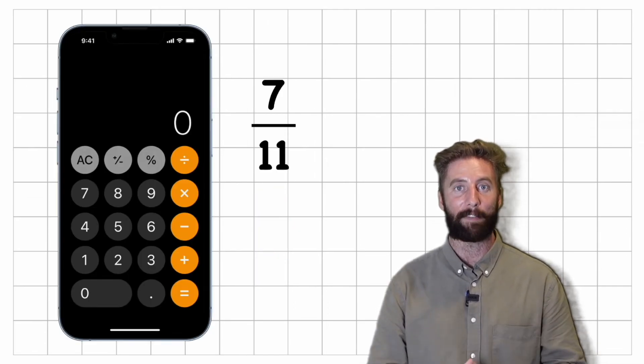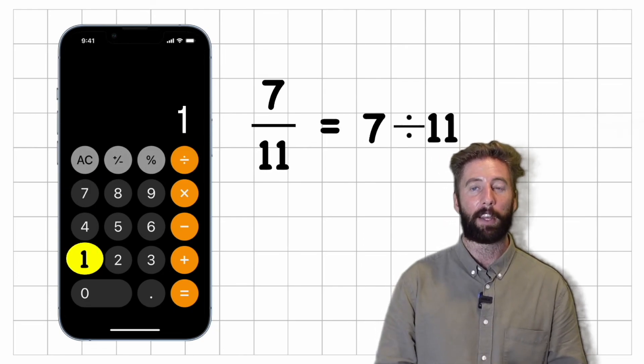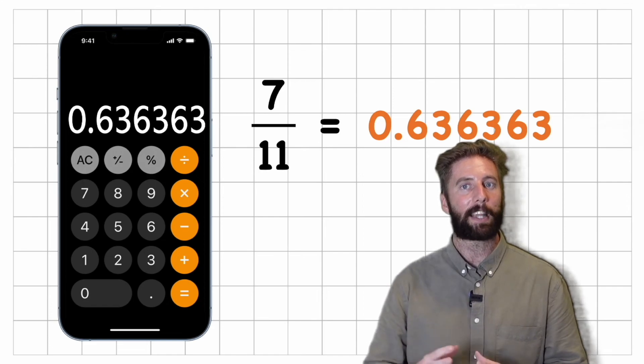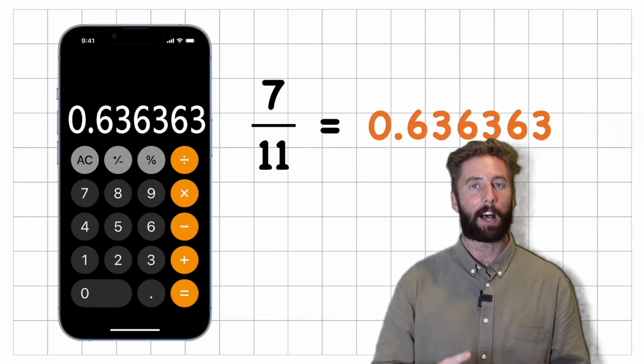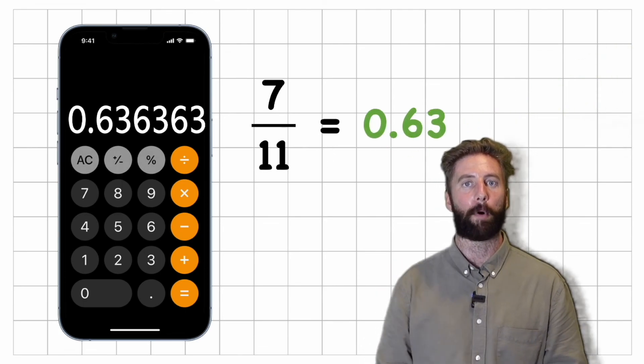Let's have a look at another one on the calculator. Let's have a look at what seven elevenths are. So I just do seven divided by eleven, so that equals 0.63 6363. So I can see that repeating pattern again, but this time it's the six and the three that they're repeating. So I'm going to put my dots above both of them.